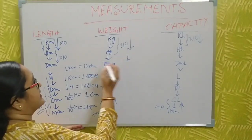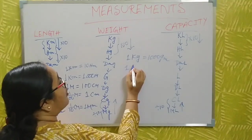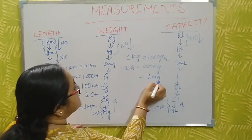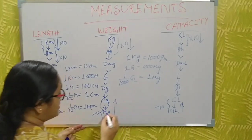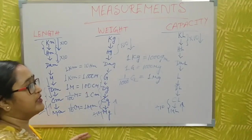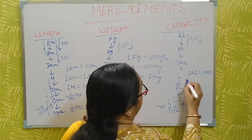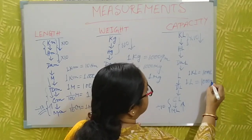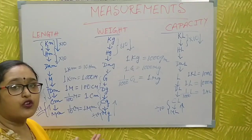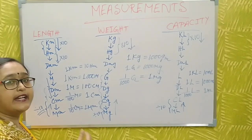Here are the standard conversions: one kilogram is 1,000 grams, and one gram is 1,000 milligrams. So one milligram is 1/1,000 gram. Similarly, one kiloliter is 1,000 liters, and one liter is 1,000 milliliters, so one milliliter is 1/1,000 liter. Before going to the next part, please pause the video, write all these things from the board, then continue.